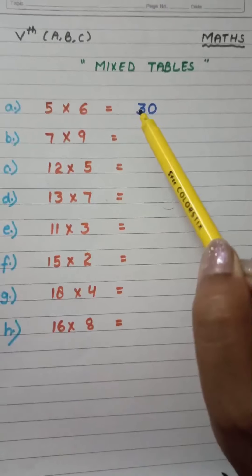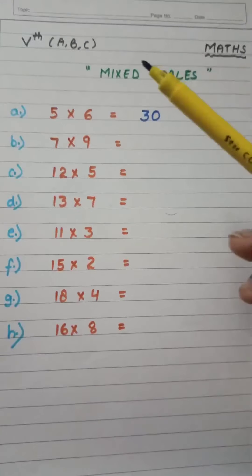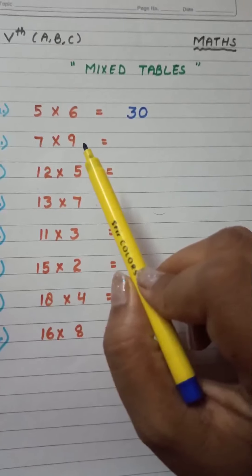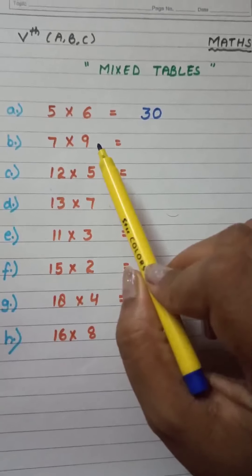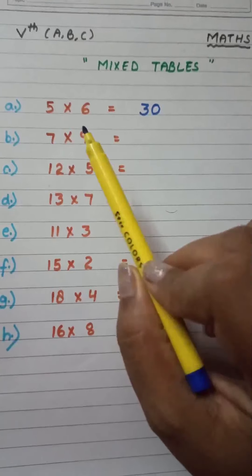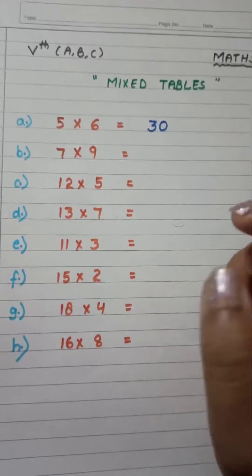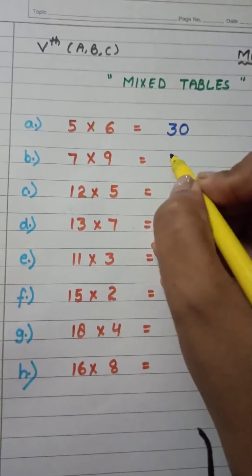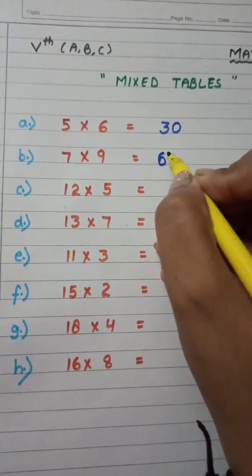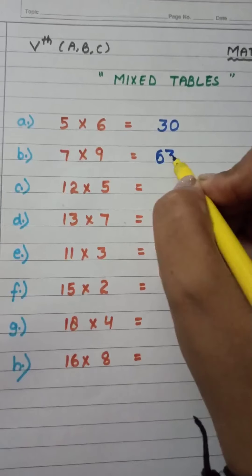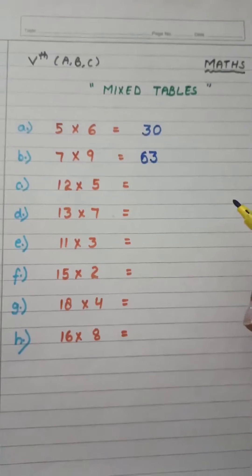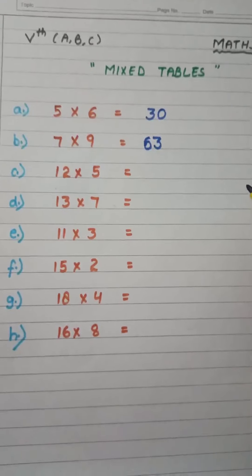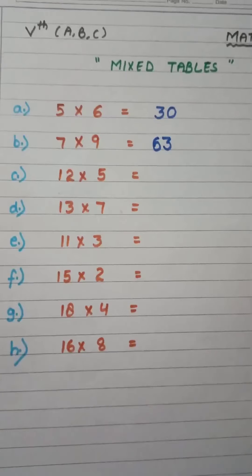Now Part B: seven nines are. We have to read the table of seven — seven nines are 63. If any of you gets confused, you can also read the table of nine and get the same answer: nine sevens are 63.